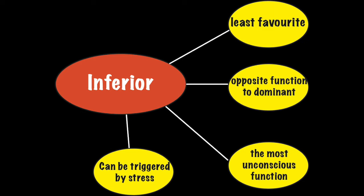Finally, we have an inferior function, our least favourite function, which is not part of our four letter code either. This is the opposite function to the dominant and the most unconscious function. This function can be triggered in a negative way by stress.